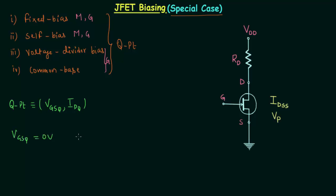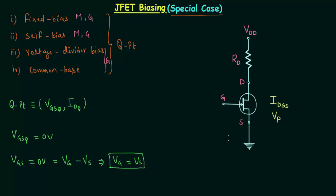VGSQ is equal to zero volt. We write Q in the representation because we want to show VGSQ is one of the coordinates of the operating point. So VGSQ, which is the input voltage VGS, equals zero volt. This means VG minus VS equals zero, which implies VG equals VS — the potential at the gate terminal is the same as the potential at the source terminal — so we can join them, making VGS equal to zero volt.